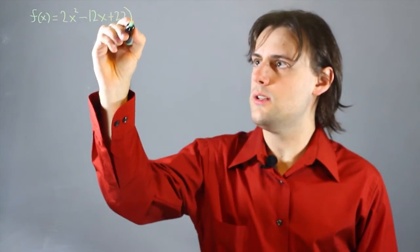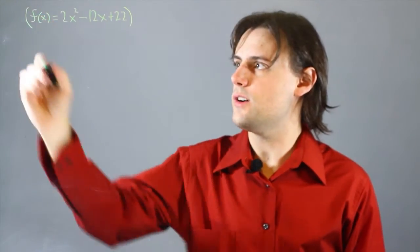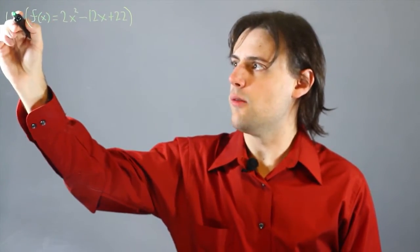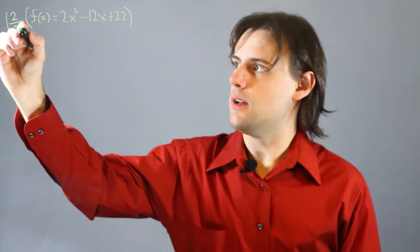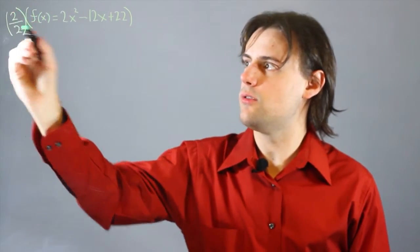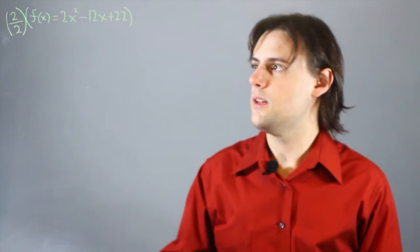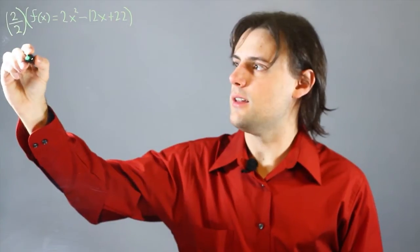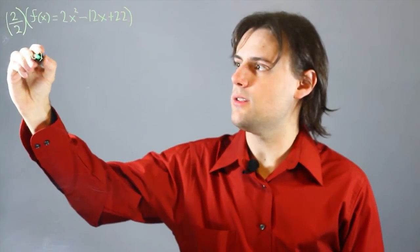So what we do is we multiply our function, our polynomial, by 1, but 1 here is in terms of 2 divided by 2, and on the left-hand side that simply becomes f of x times 1.